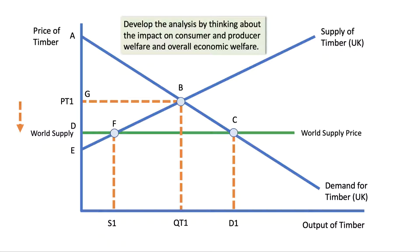What about the gains from trade? One way of thinking about the welfare consequences is to consider consumer surplus — a measure of consumer welfare — and producer surplus — a measure of producer welfare. I've labeled some key points on the diagram so we can work through the consequences for welfare piece by piece.